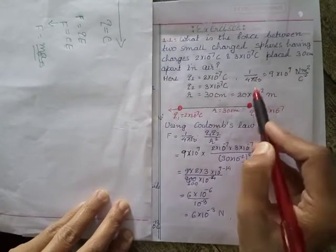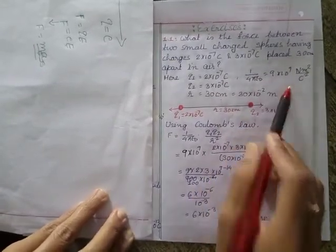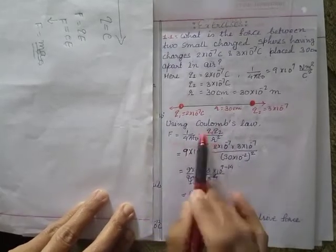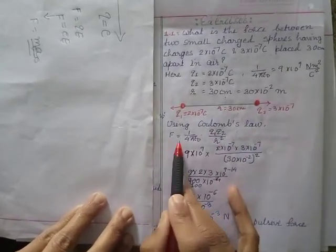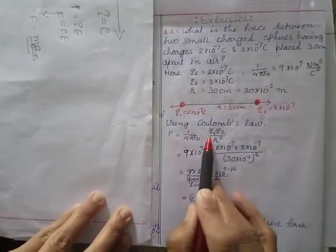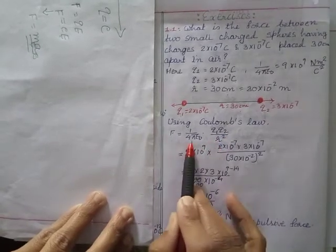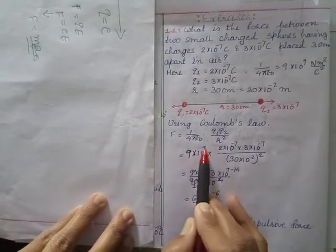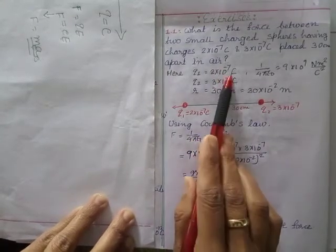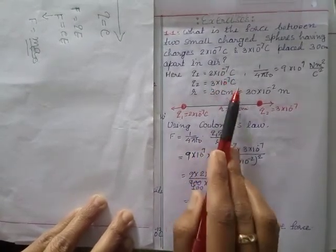So now since I want to find the force, I will use Coulomb's law. Coulomb's law is F = (1/4πε₀) × (q₁q₂/r²). Put the value: this value is 9×10⁹, q₁q₂, put this value 2×10⁻⁷, 3×10⁻⁷, and r² is (30×10⁻²)².